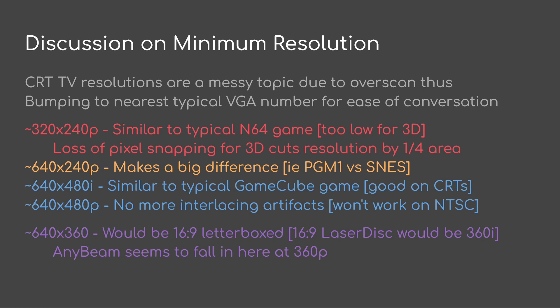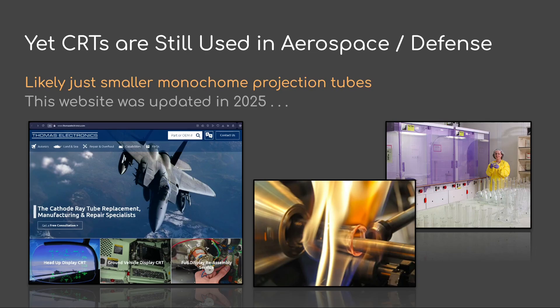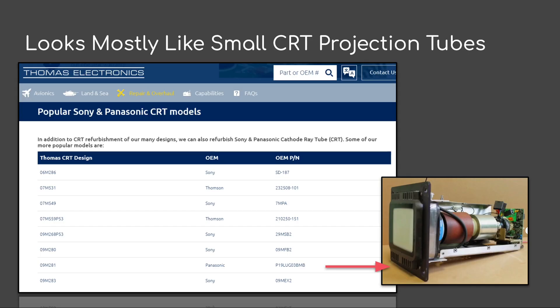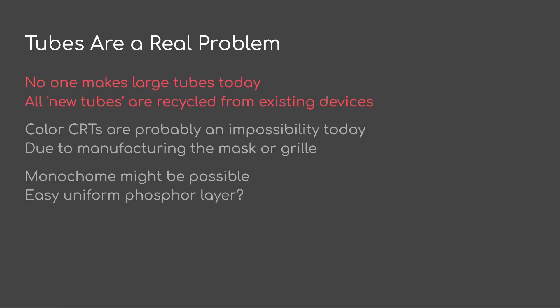The topic that started this whole thing was: CRTs are gone, what do we use? CRTs are still used in aerospace and defense, but it seems like it's all likely monochromatic projection tubes. Looking at Thomas Electronics, their refurbished CRTs are all small CRT projection tubes. While people have built the boards, the tubes are a real problem — no one makes large tubes today. All new tubes are recycled from existing devices, to my knowledge. Colored CRTs are probably an impossibility today for manufacturing because of the mask or the grill. Monochrome seems like it might be possible, since all that needs is a uniform phosphor layer.